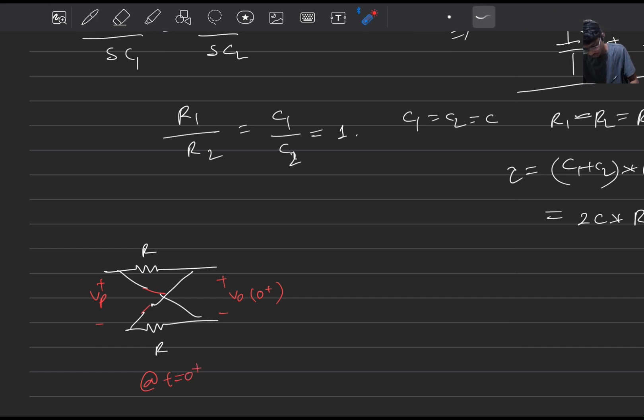Now as we can observe that this positive terminal is connected to this end negative end and this negative terminal is connected to this end positive end, hence V naught of zero plus would be equals to minus of Vp.